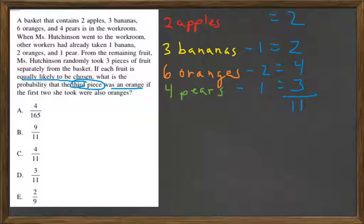So let's see, on the first time around, it would have been a four, because there's four oranges left, a four out of eleven chance of getting that first one.